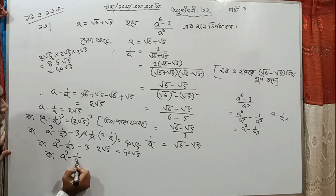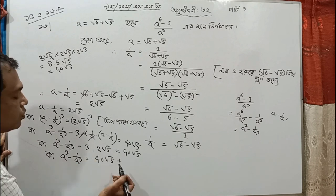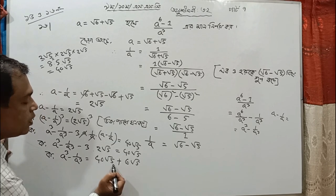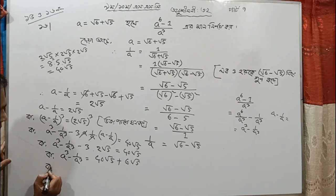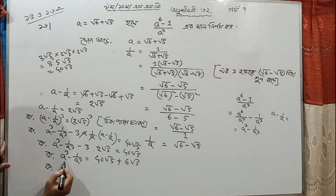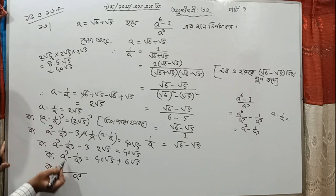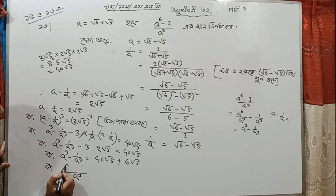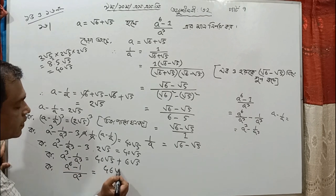So a³ minus 1 by a³ is so much — 44 root 5 plus 3, and 6 root 5, so this is a root which is a good thing: 44 root 5 plus 6 root 5 is 46. And we will make the difference in our way, so the answer is 11, and the diversity is 11 — 46 root 5.